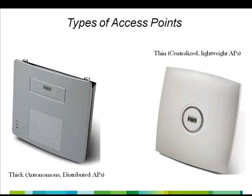In a Cisco Unified Wireless network, we use lightweight access points. The lightweight access points are zero-touch deployed and no individual configuration of access points is required. They have to first discover controllers and register with them before they can start servicing wireless clients. Let us now look at the wireless LAN controller discovery process.